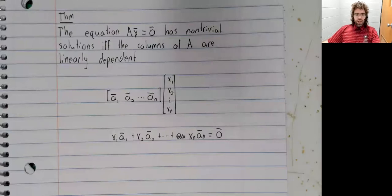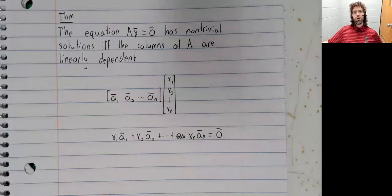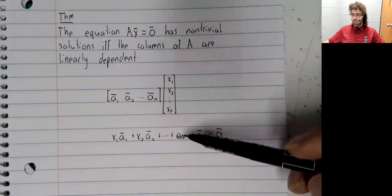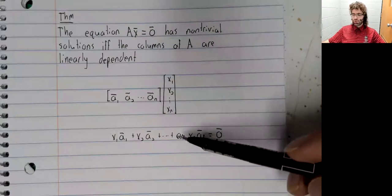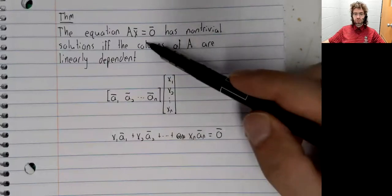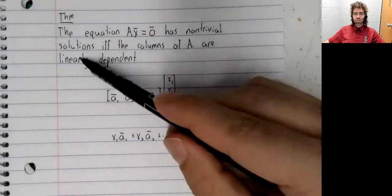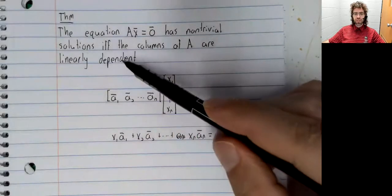And now it is literally the definition of linear independence and linear dependence that this vector equation has non-trivial solutions if and only if the vectors are linearly dependent.